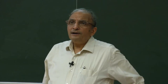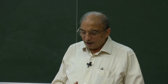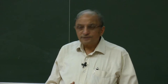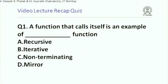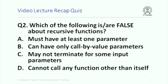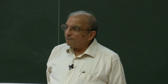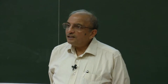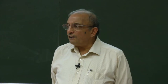Let's spend two or three minutes quickly discussing these questions. Question one — a function that calls itself is an example of what? Recursive. So the answer is A. Which of the following are false about recursive functions? A: must have at least one parameter — not necessary. A recursive function can read a variable and then call itself recursively and return a value.